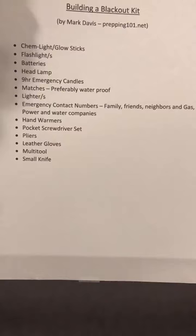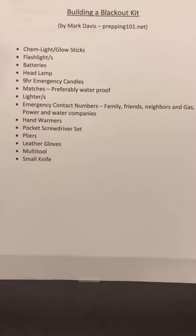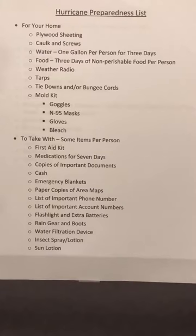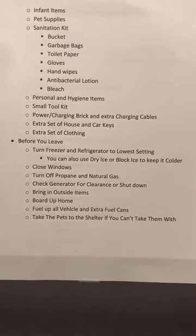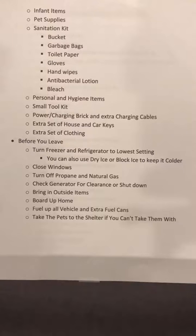This one is by Mark Davis from prepping101.net — it's a blackout kit for when you don't want people to know where you're at or when the lights go out. Really good to have. Next is the hurricane prep video list — your preparation list covering stuff you need for your home, stuff to take with you, and some items are per person. You don't need a medical first aid kit per person, but you do want cash, emergency blankets, rain gear and boots. Page two goes into some of the other things you might want. A sanitation kit is probably pretty important — real easy to put together, it all fits inside a bucket.